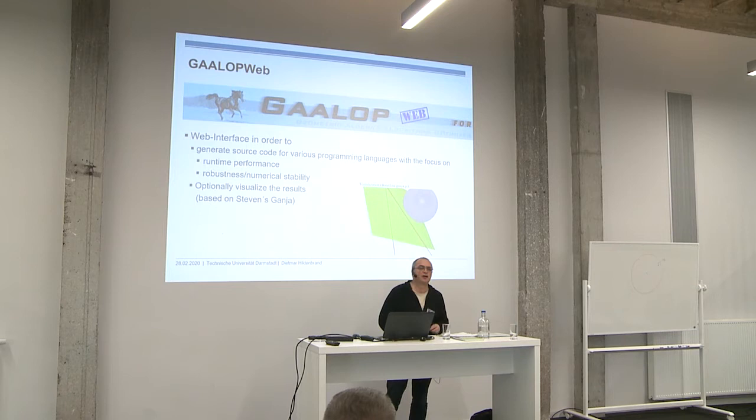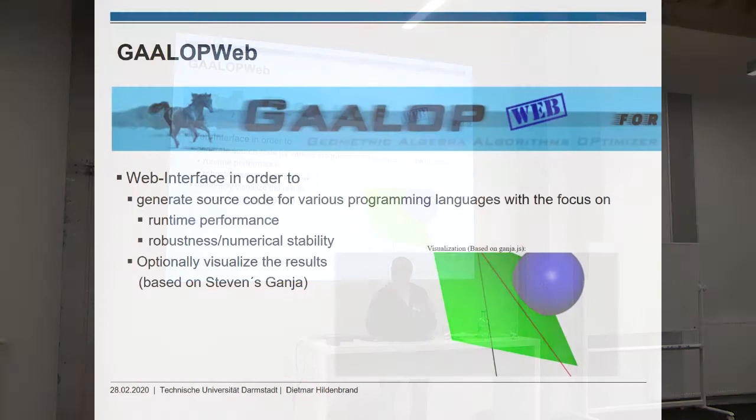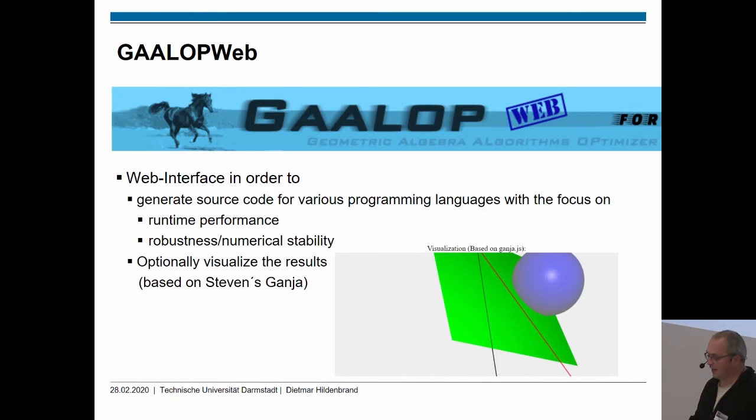GALOPweb is a web interface in order to generate optimized code for different various programming languages. Its focus is on runtime performance as well as on robustness and numerical stability.